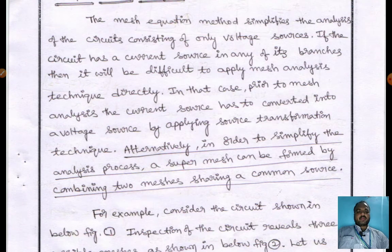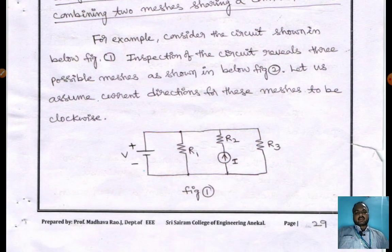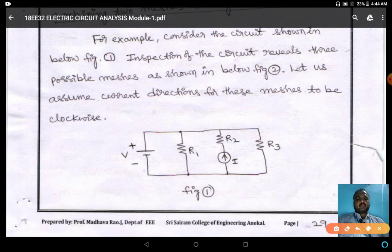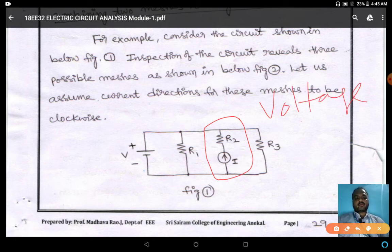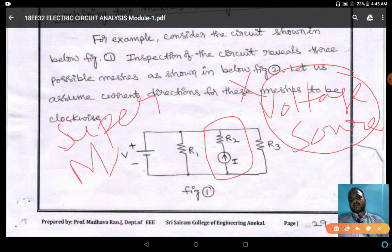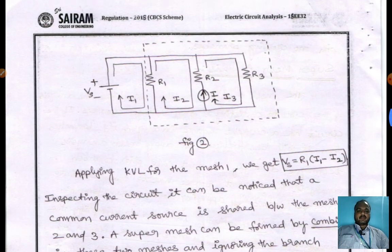Alternatively, in order to simplify the analysis process, a super mesh can be formed by combining the two meshes sharing a common current source. For example, consider a circuit having both a voltage source and a current source. Here the current source has a series resistance, so we cannot convert it into a voltage source. Therefore, we have to go for super mesh technique.